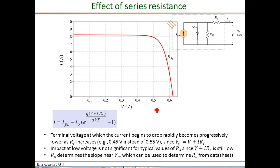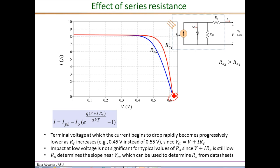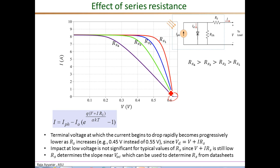The next parameter to estimate is the series resistance R_S. In an earlier video we looked at the effect of series resistance on the IV plots in detail. The series resistance significantly affects the slope of the IV curve near the open circuit condition. A relatively small series resistance gives a high dI/dV near open circuit. As R_S increases, the slope near open circuit becomes smaller and smaller. Therefore we can use this relationship to estimate the series resistance from the slope of the IV curve at the open circuit condition.